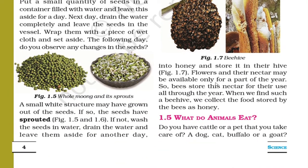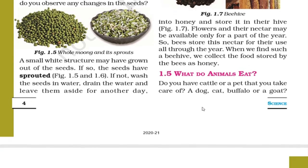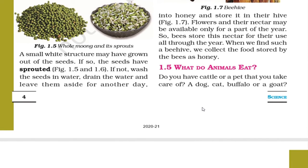Flowers and their nectar may be available only for part of the year — flowers are seasonal. So bees store their food in the form of honey, so that when there are no flowers they can eat honey. Bees store this nectar for their use all through the year. When we find such a beehive, we collect the food stored by the bees as honey.